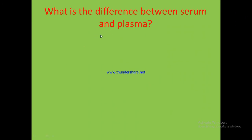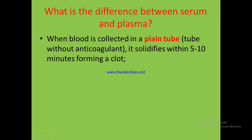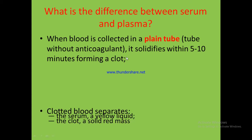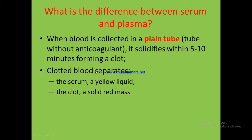What is the difference between serum and plasma? When blood is collected in a plain tube — a tube without anticoagulant — it solidifies within 5 to 10 minutes and becomes a clot. When this clotted blood is centrifuged, the upper portion becomes serum and the lower portion becomes the clot or red mass of cells.